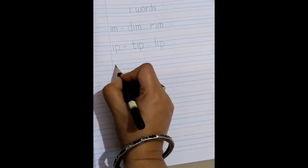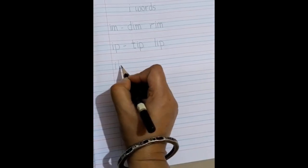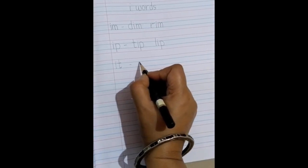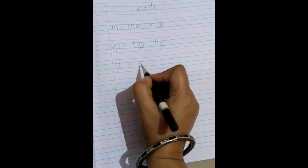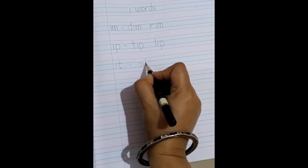It. Sound of I is E and a T. It. And the word that we are going to use is sit. S, I and a T, sit.